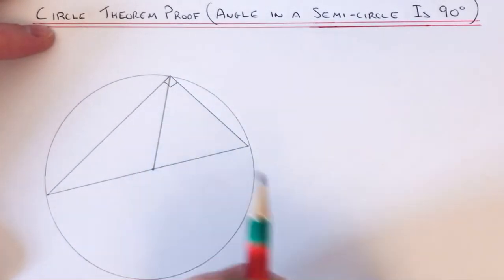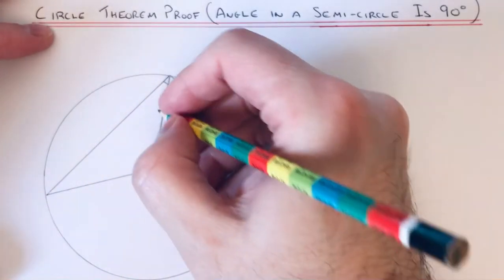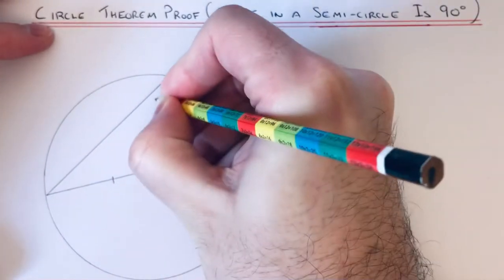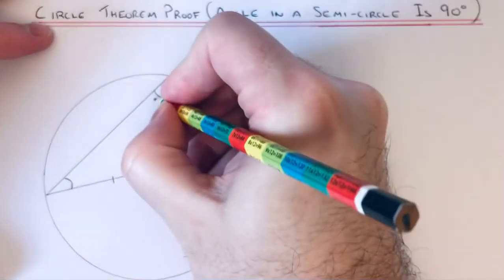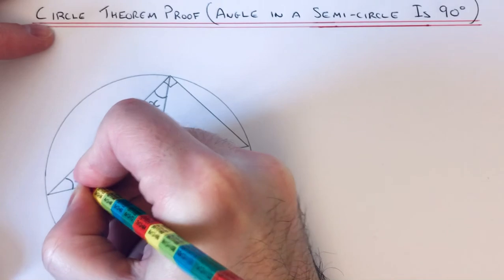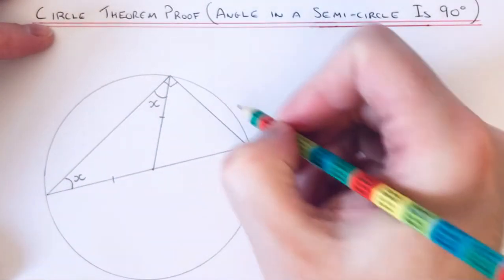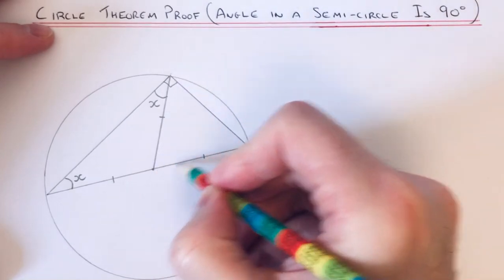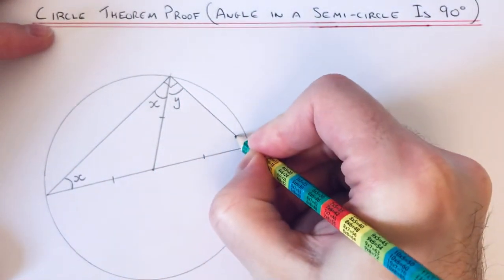Okay, so we know in an isosceles triangle that two angles are the same. So in our first one, it will be these two angles here which are the same, so let's call those angle X. Okay, and for our second triangle, again these two lengths here are the same, let's call those angles here angle Y.